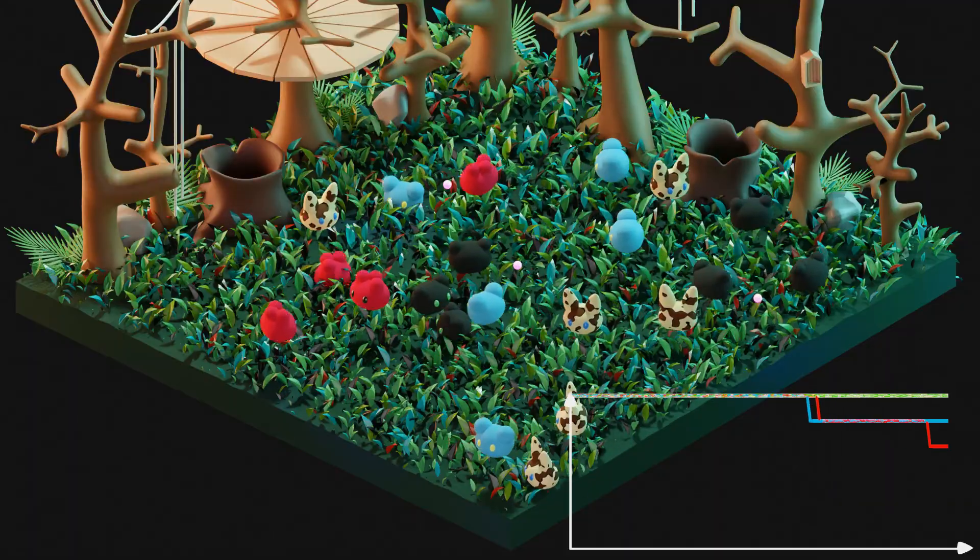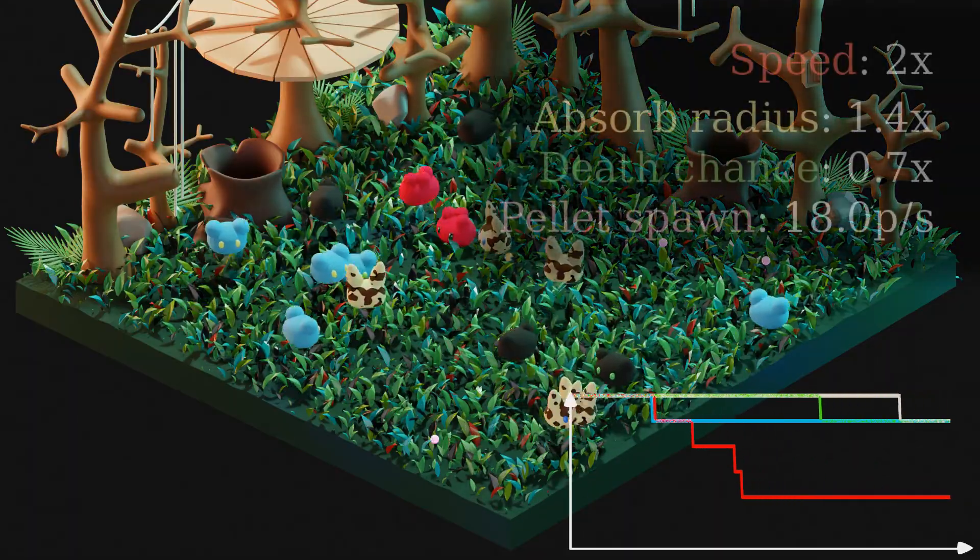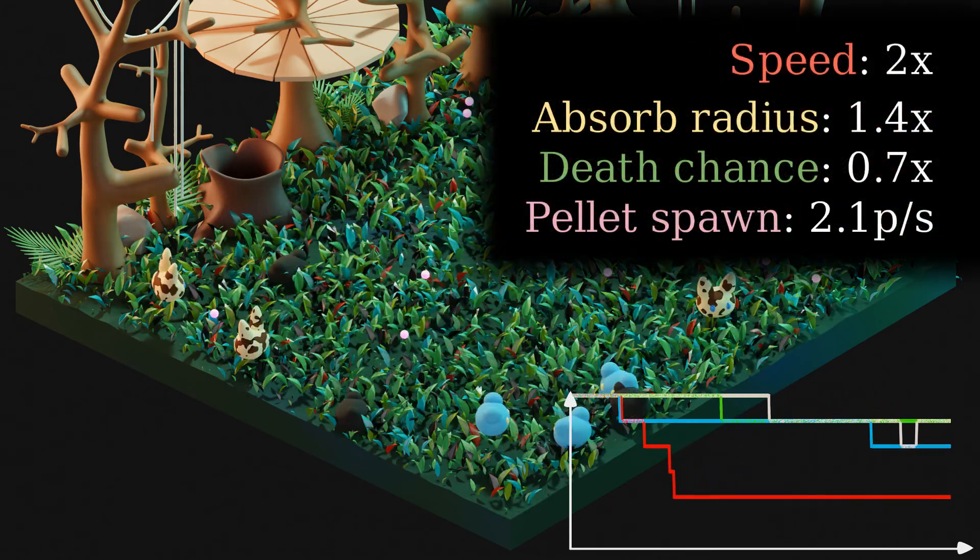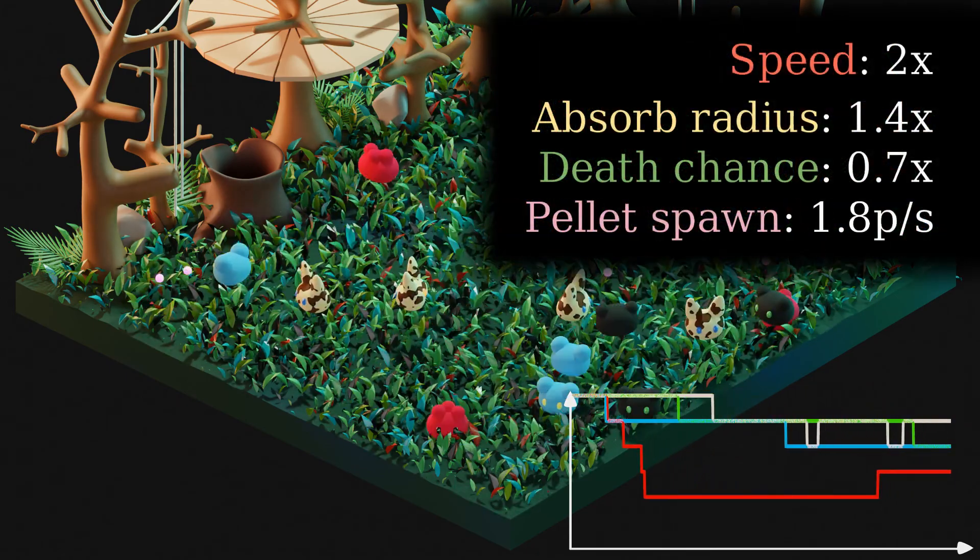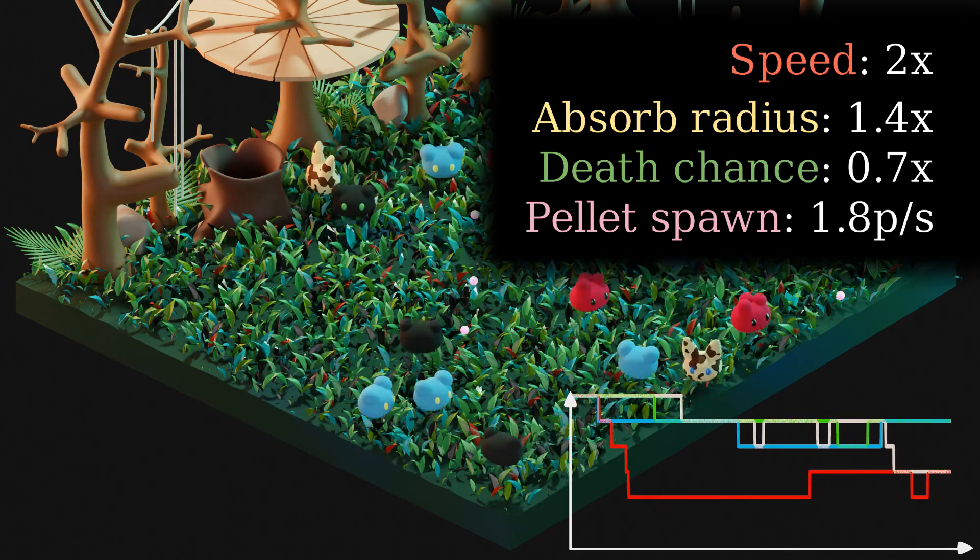To test this out, let's run the simulation again, but reduce the amount of magic pellets we put out. This will ensure that the total population stays small. Let's see what happens.